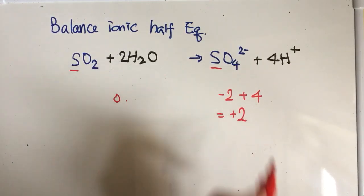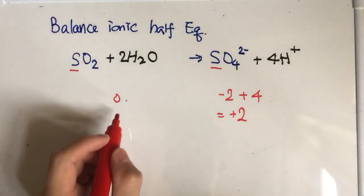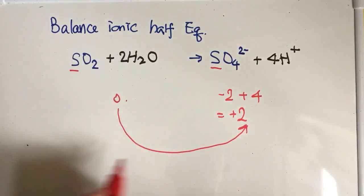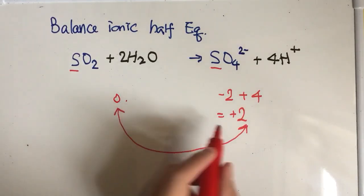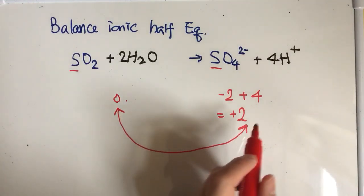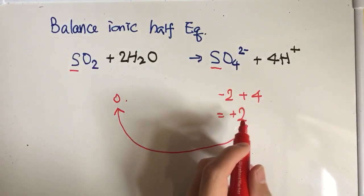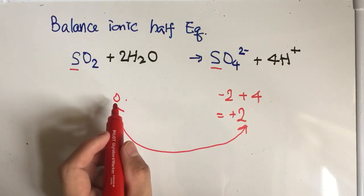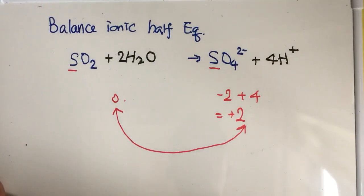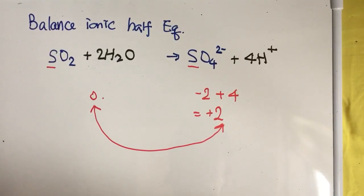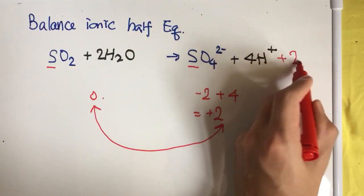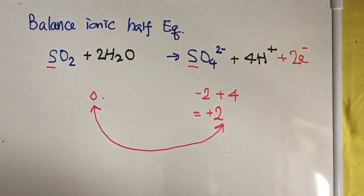How do you balance the reactant and product side to make them equal? You add two negative charges on the product side so that it becomes zero. So you have to add two electrons on the product side: +2e-.